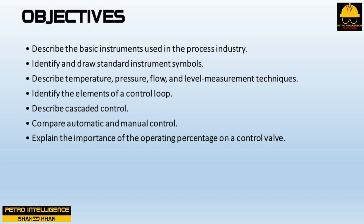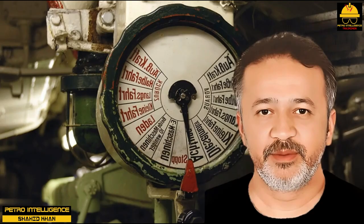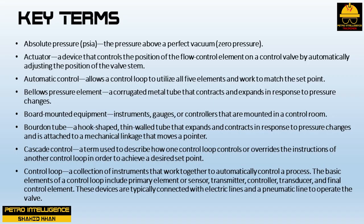After completing this course you will be able to describe the basic instruments used in the process industry, identify and draw standard instrument symbols, describe temperature, pressure, flow, and level measurement techniques, identify the elements of a control loop, describe cascaded control, compare automatic and manual control, and explain the importance of the operating percentage on a control valve.